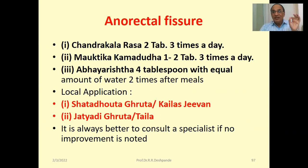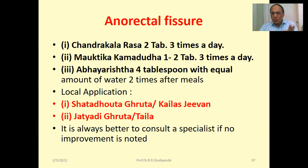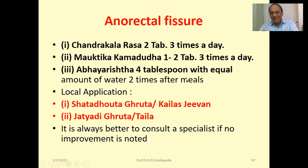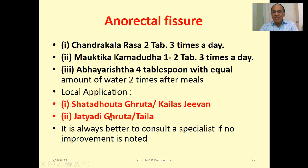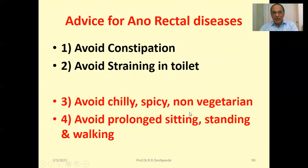Ayurvedic treatment: Shamana chikitsa — anti-pitta treatment with Chandrakala Rasa, two tablets morning, afternoon, and evening. Mukta Pishti / Mauktika Kamdudha with pearl — very cooling — two tablets morning, afternoon, and evening. Abhayarishta (haritaki / Terminalia chebula) is the best for constipation: four teaspoons with equal amount of water, twice daily after lunch and dinner. Local application: Shat Dhauta Ghrita, Jatyadi Ghrita, or Jatyadi Taila (medicated ghee/oil) for external use. Always consult a specialist if no improvement is noted.